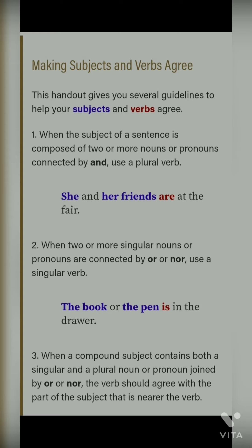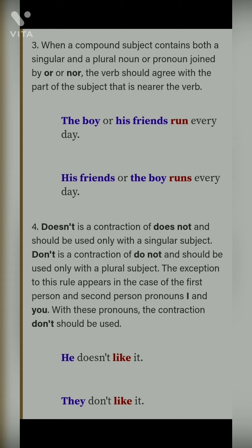Third point: when a compound subject contains both a singular and a plural noun or pronoun joined by 'or' or 'nor', the verb should agree with the part of the subject that is nearer the verb. Jo bhi subject verb ke near hoga, ussi se verb lagegi. Simple present tense mein jaisa aapka subject hoga — plural hoga to singular verb lagegi, singular hoga to plural verb lagegi. For example: 'his friends' plural hai to 'run' lagega; 'the boy' singular hai to 'runs' lagega.